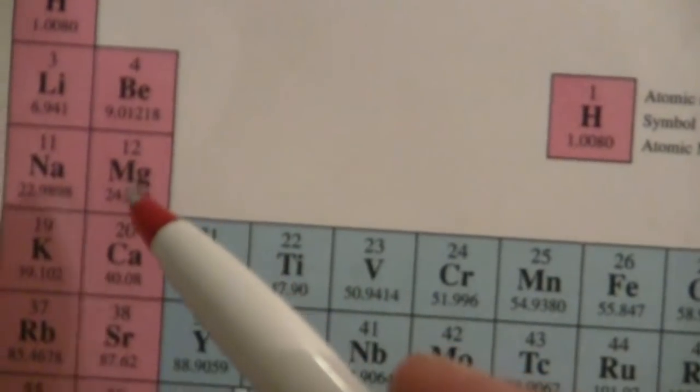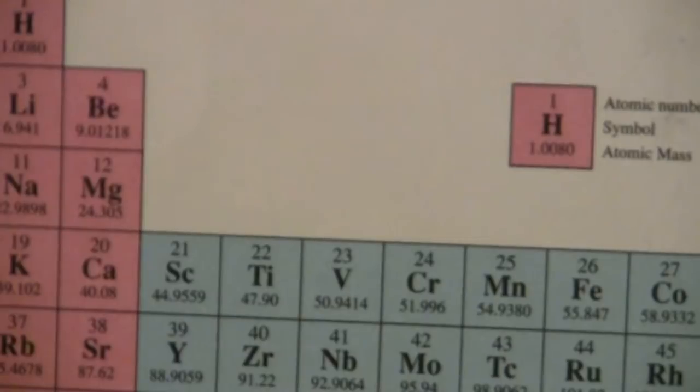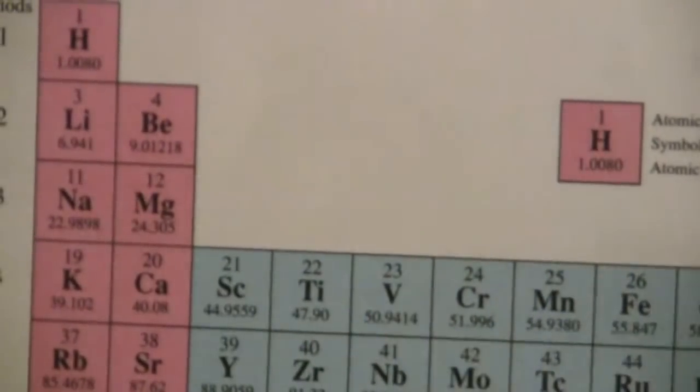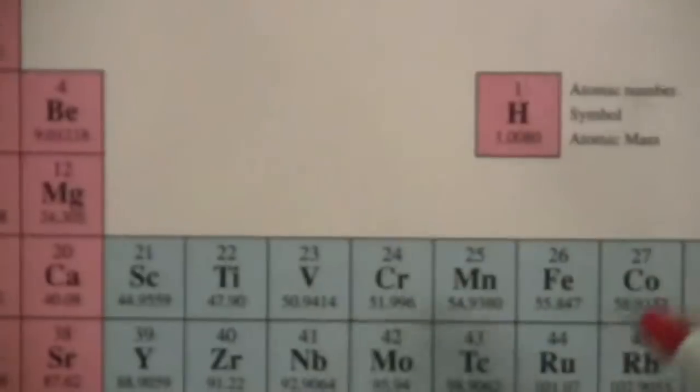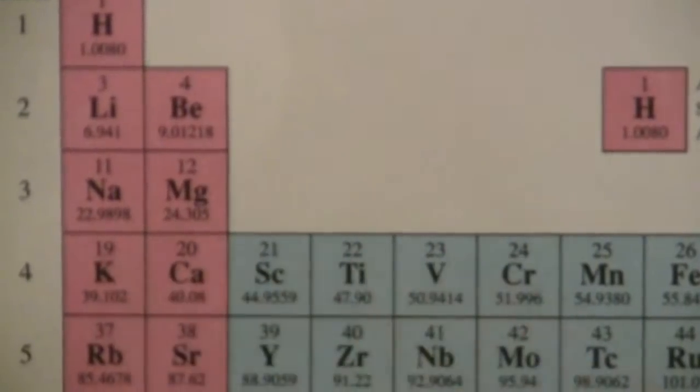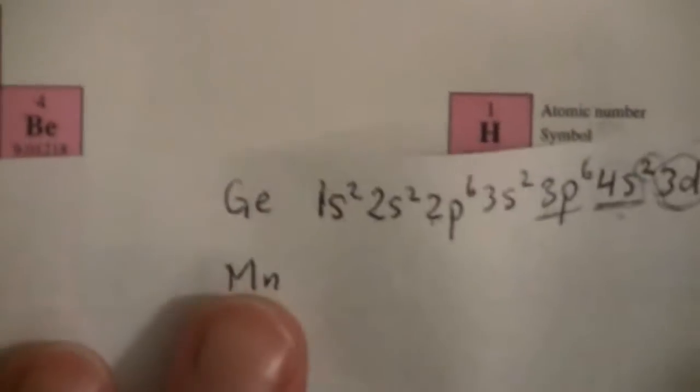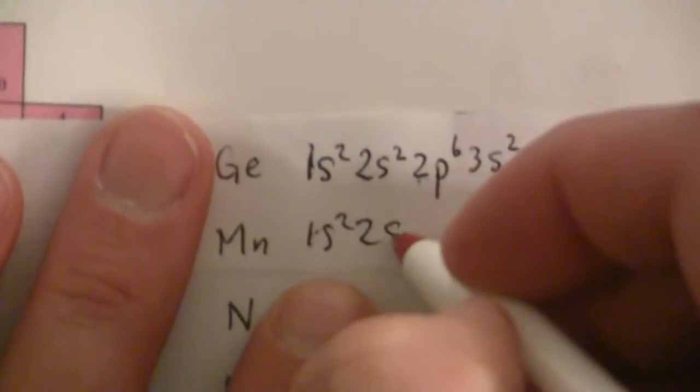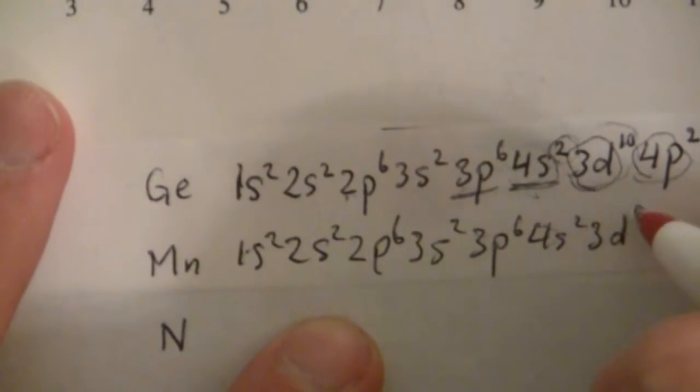So let's go on to manganese, not to be confused with magnesium, we have manganese and magnesium. This has 25 electrons in a neutral atom of manganese. And so, again, we can just walk through the periodic table. 1s2, 2s2, 2p6, 3s2, 3p6, 4s2, and now we get to the 3d5. So if we write that out, it's pretty much the same as what I have written up here, except we go up only to 3d5.